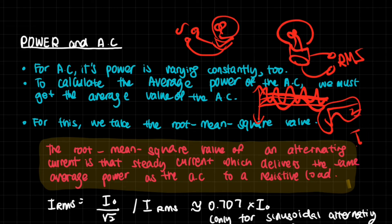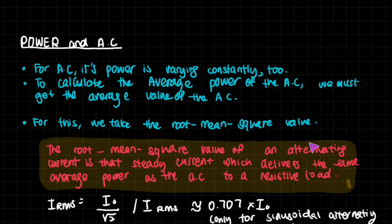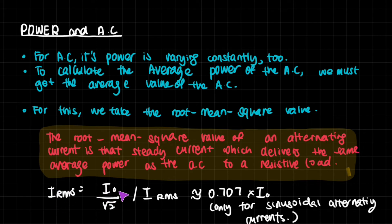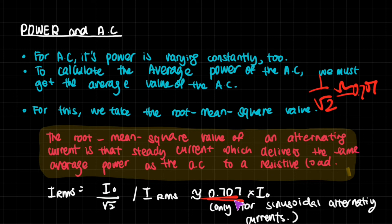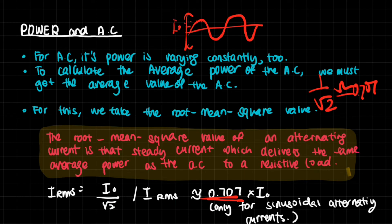Going through the full derivation process — taking the maximum current, squaring it, averaging it, then taking the square root — you get that the RMS current is the maximum current divided by √2. Since 1/√2 ≈ 0.707, the RMS is approximately 0.707 times the maximum current. So knowing I₀, you can directly find the RMS — about 70% of the peak value.